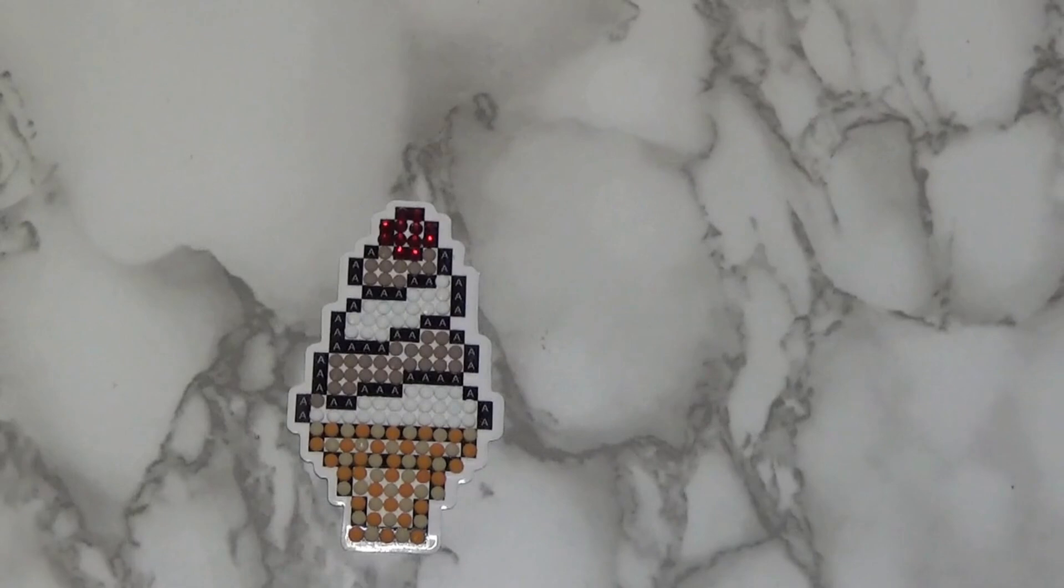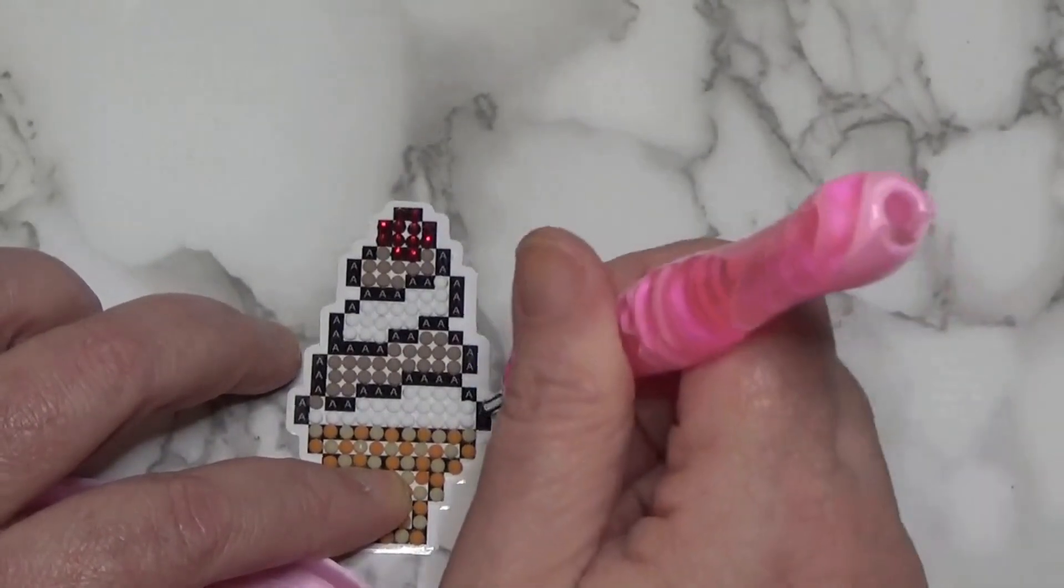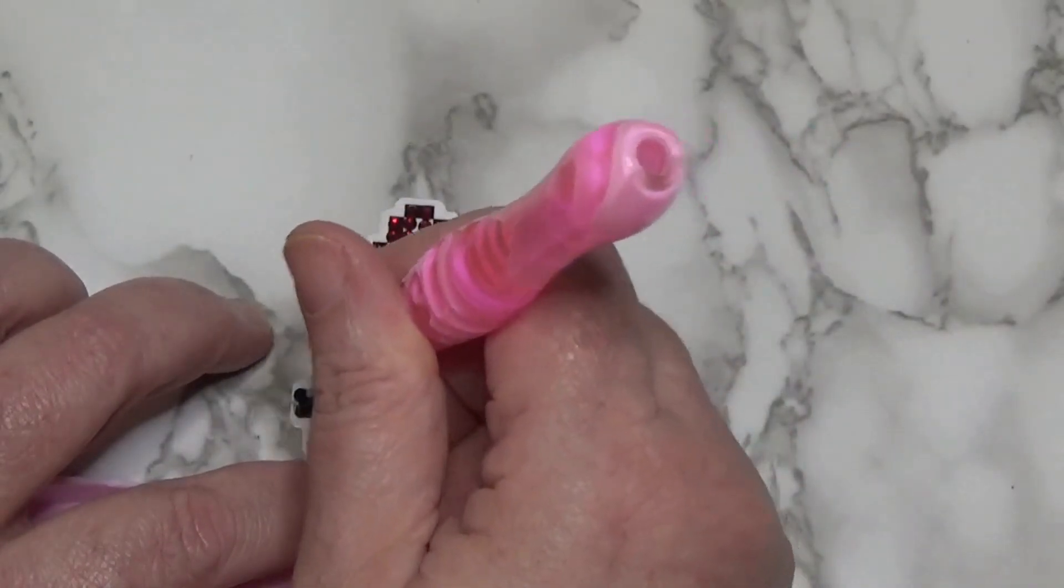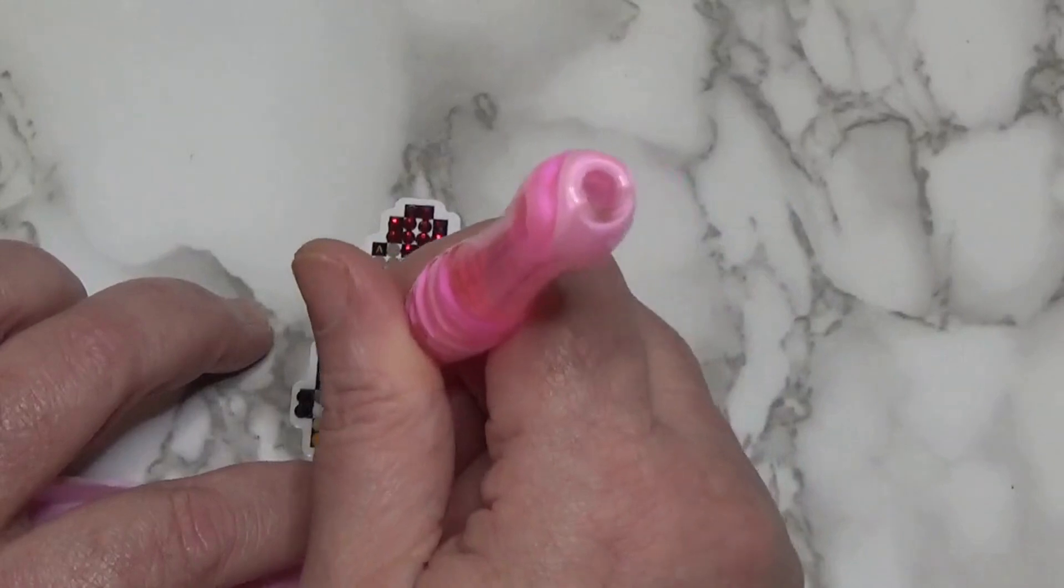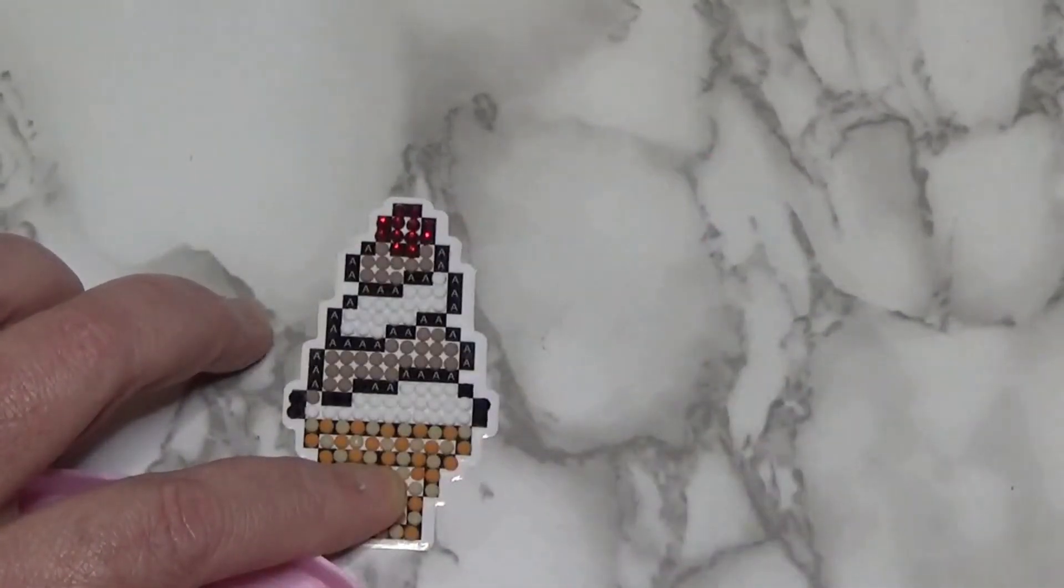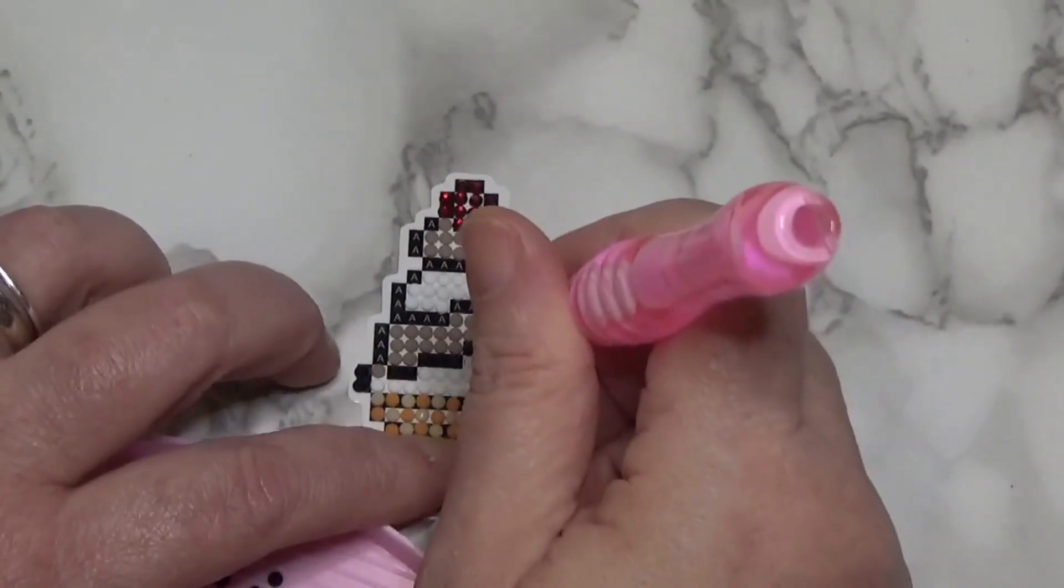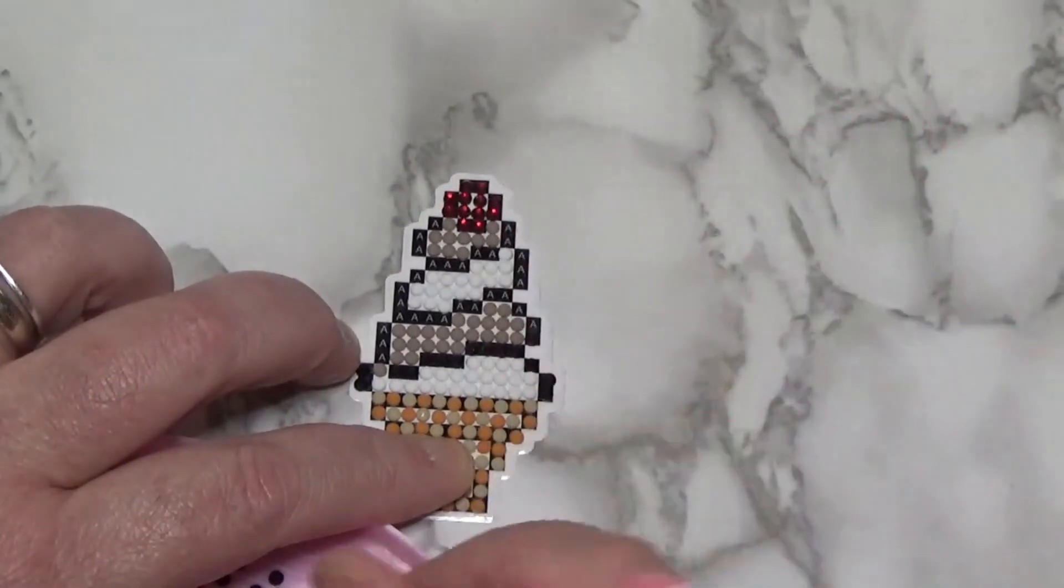So now what we're going to do is we're going to go ahead and take our black to outline. Because why not, right? They gave us a ton of the black 310, so might as well put it to good use. And hopefully I'm not running over that half hour mark. There we go.